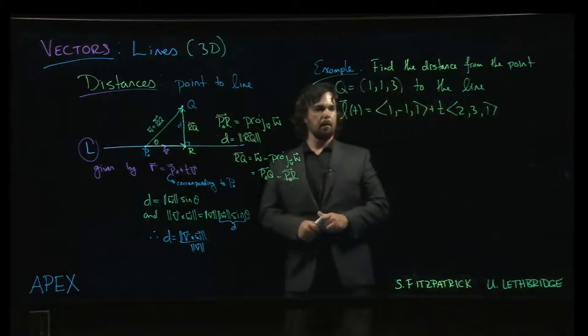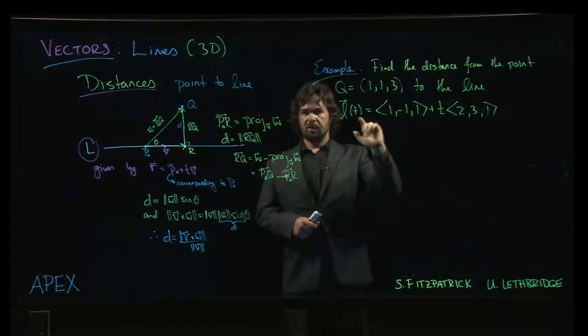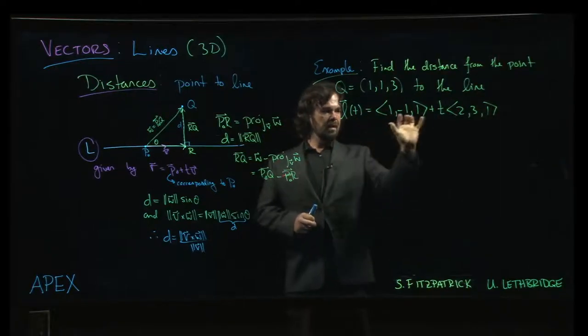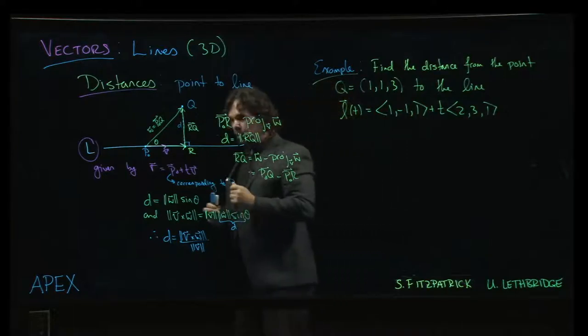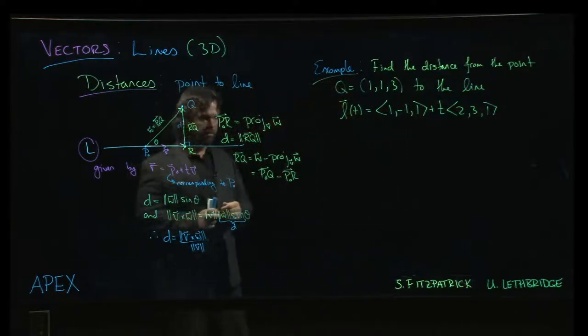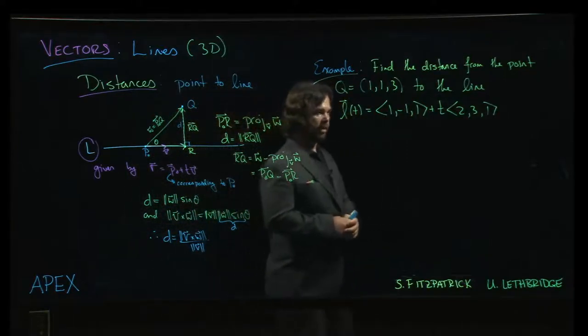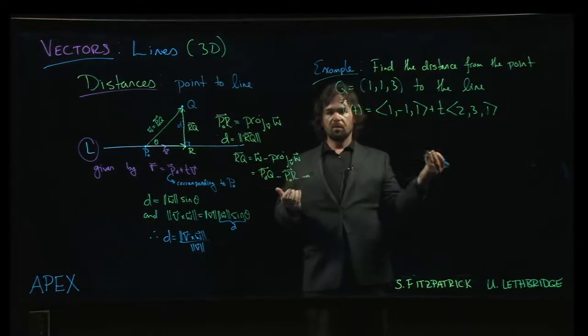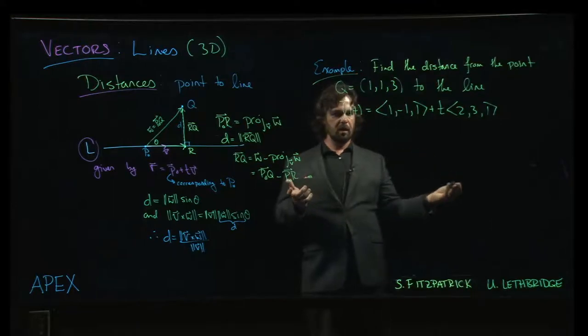So here's an example. I don't think we've used this notation previously in the videos, this L of t. This is the first example of a vector-valued function. So in the next chapter in Apex Calculus, you'll be studying general examples of vector-valued functions. This is a simple one. It's a linear vector-valued function.